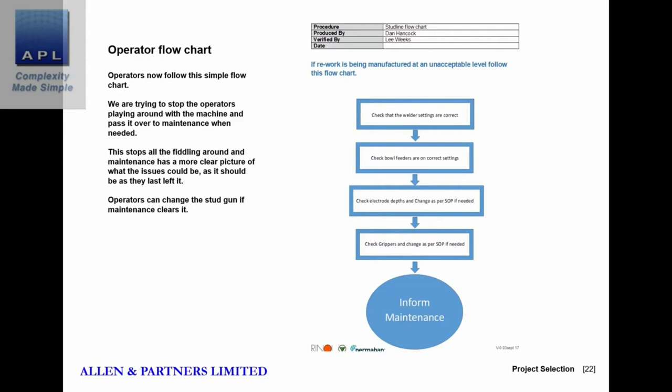They also created a troubleshooting flow diagram. This prevents operators from taking matters into their own hands when something goes wrong. The process is: check that all variables have been set up according to the standard operating procedures. If everything is set to the rules and the machine is still not working properly, you call for help — you do not try to fix it yourself.